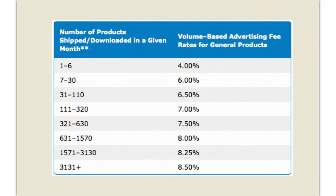As an affiliate, here's an example of some of the percentages that you can earn. It's really based on how many general products you're selling in any given month, and there are specific regulations around this in terms of categories. But generally this is what you'll see for most of the products in Amazon outside of certain categories.